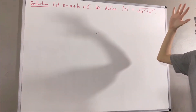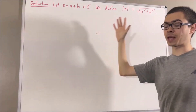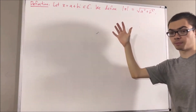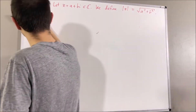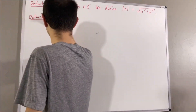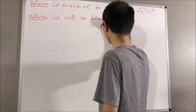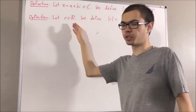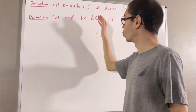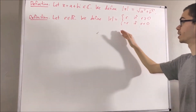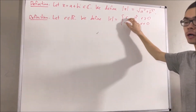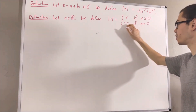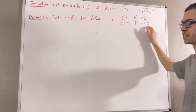We have another definition for absolute value, and that involves the absolute value of a real number. Let r be a real number. We define the absolute value of r to be r if r is greater than or equal to zero, and negative r if r is less than zero.